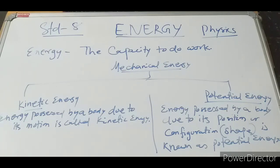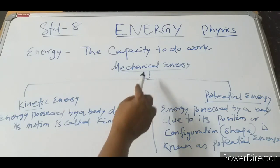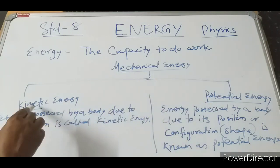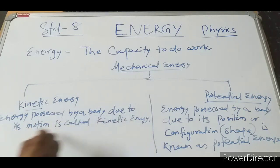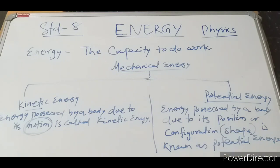So mechanical energy is of two types: kinetic energy and potential energy. Kinetic energy — energy possessed by a body due to its motion. When the body is moving, the energy possessed is kinetic energy. Potential energy — due to its position or shape. Now we will go for kinetic energy. The condition is your body must be in motion.